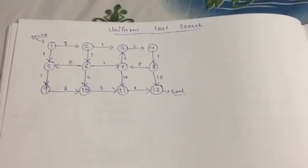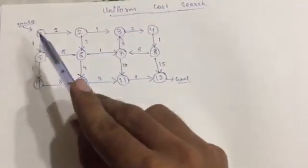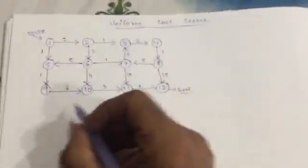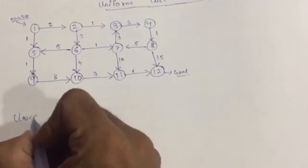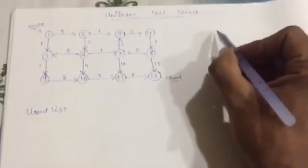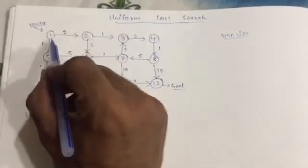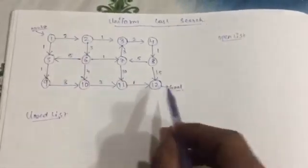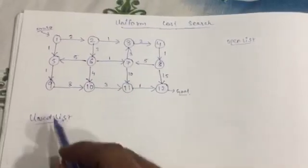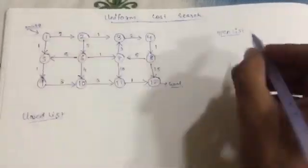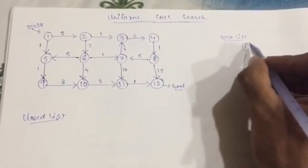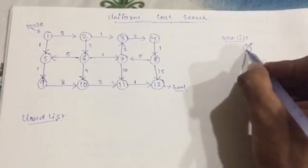Now let's solve this example. You have to maintain two lists here: an open list and a closed list. First, you have to start from node 1 and you have to reach node 12. So first, node 1 is included with cost raised to zero.